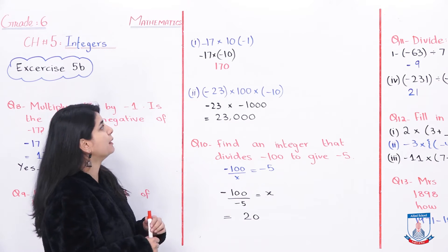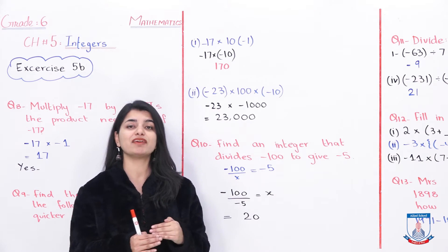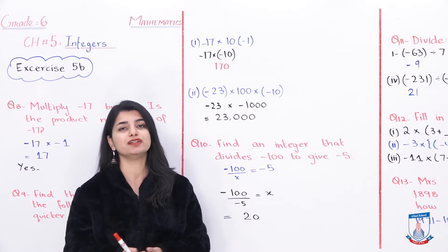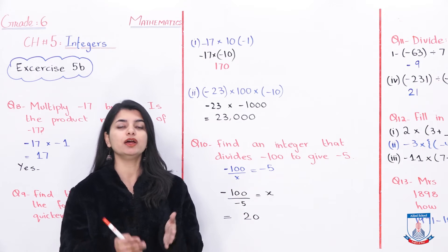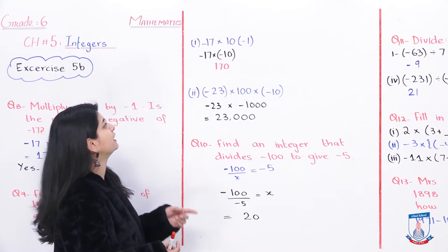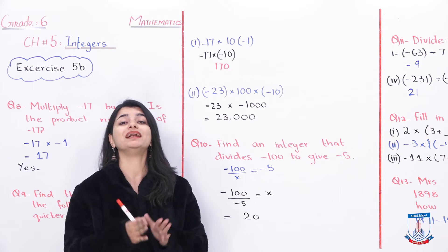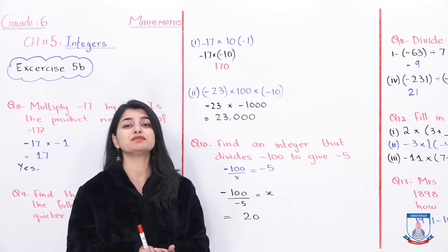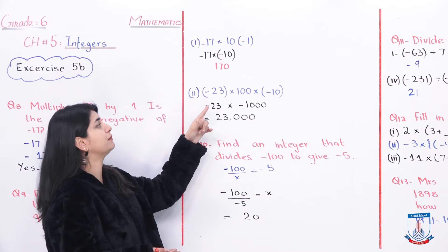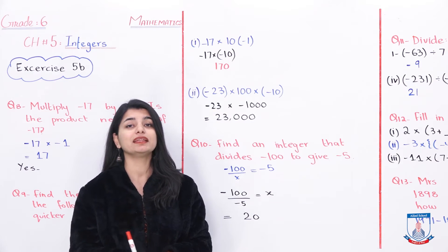Once we open the bracket, we have minus 17 multiplied by minus 10. Then multiply the two: 17 times 10 gives 170. Now determine the sign by looking at the two negative signs — both are like signs. When like signs are multiplied, the answer is positive. So minus times minus is positive. The answer is positive 170. That was the first part.